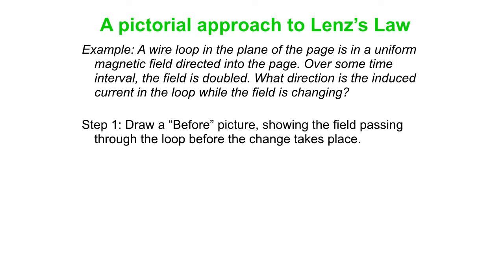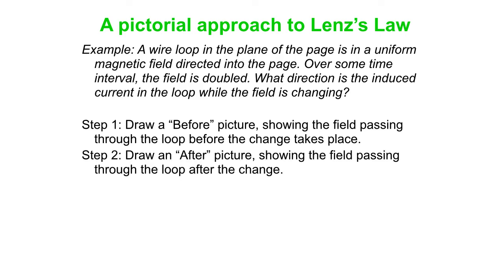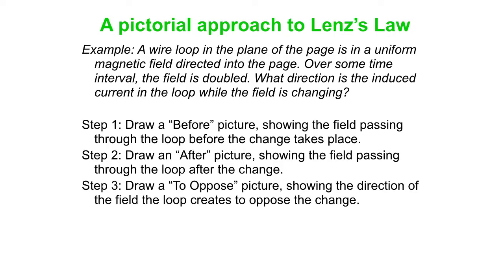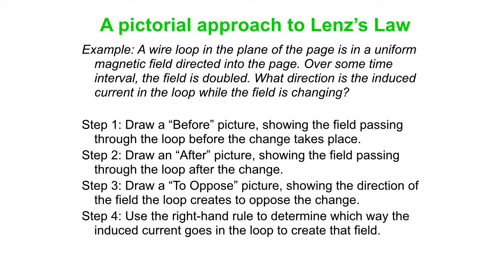Step one: draw a before picture showing the loop and field before the change takes place. Step two: draw an after picture showing the field passing through the loop after the change. It's very important to note that the field in these two pictures comes from something external to the loop itself. Step three: draw a 'to oppose' picture — this is the field created by the loop to try and oppose the change in flux. Step four: use your right-hand rule to figure out which way the induced current goes, given the direction of the induced field.